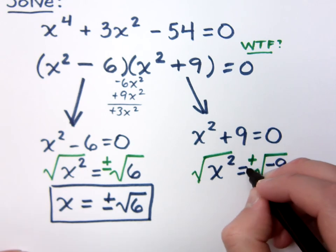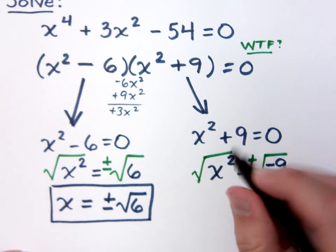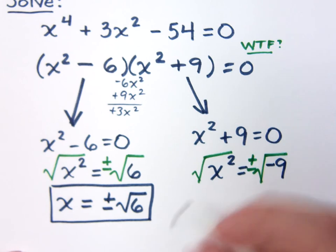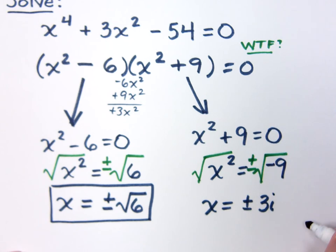And then, x is equal to plus or minus three i. Three i. I always forget to write that. How many solutions do I have? Four.